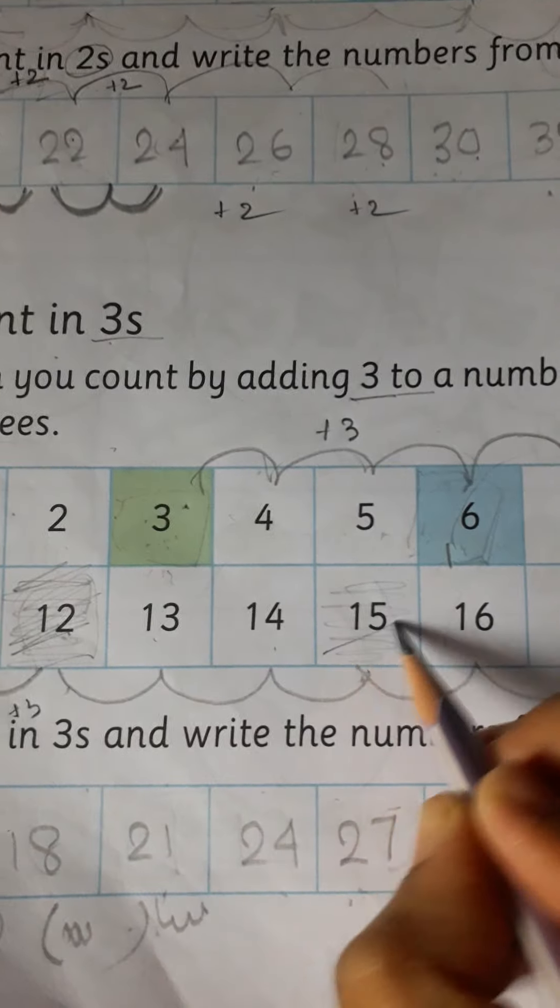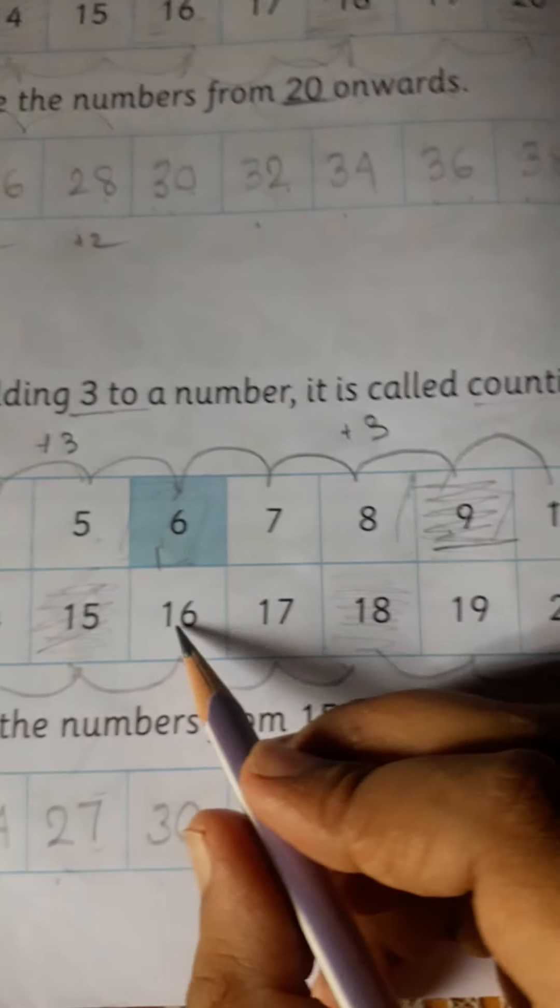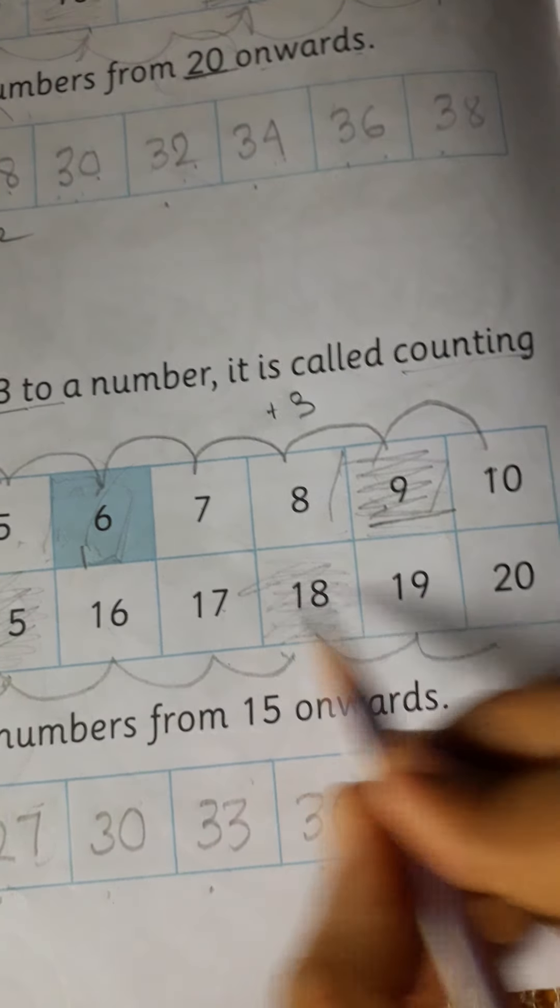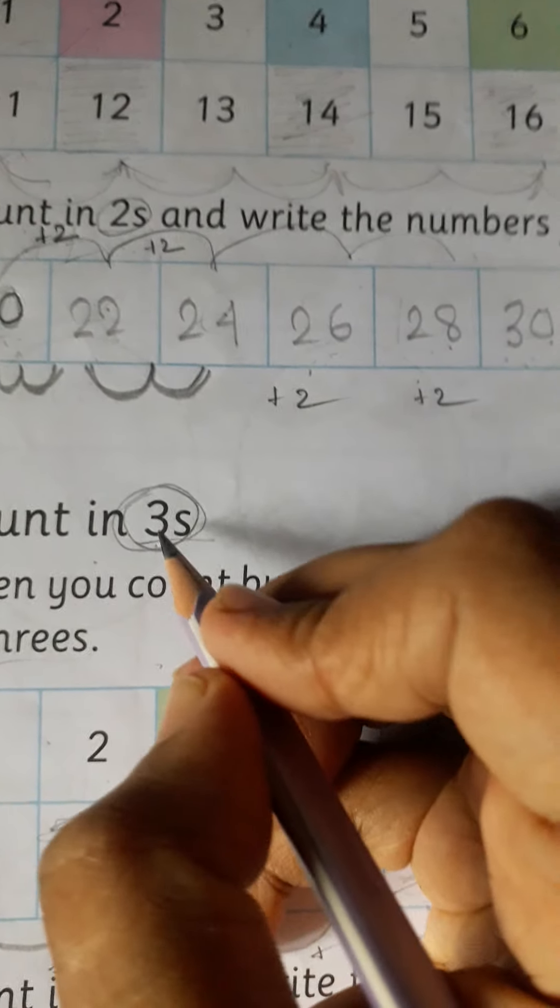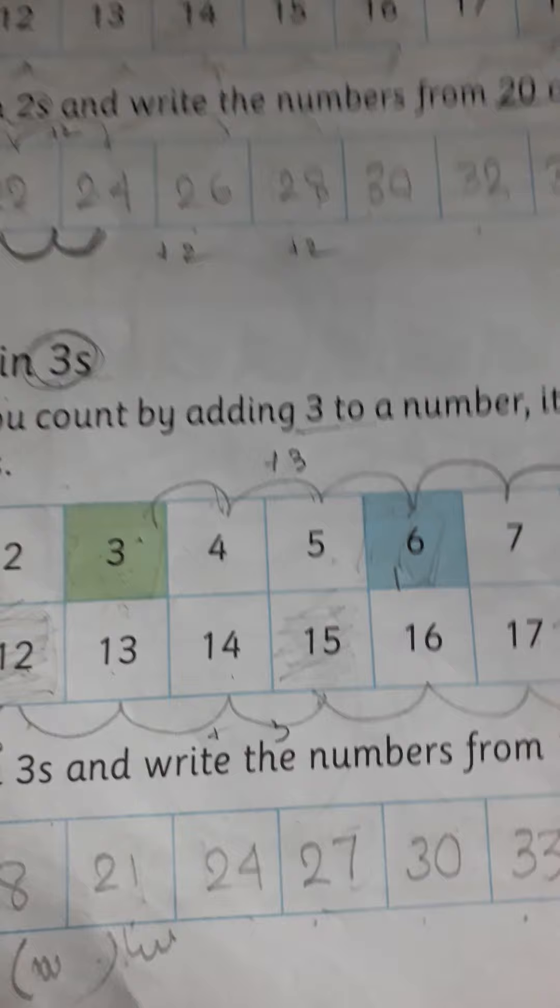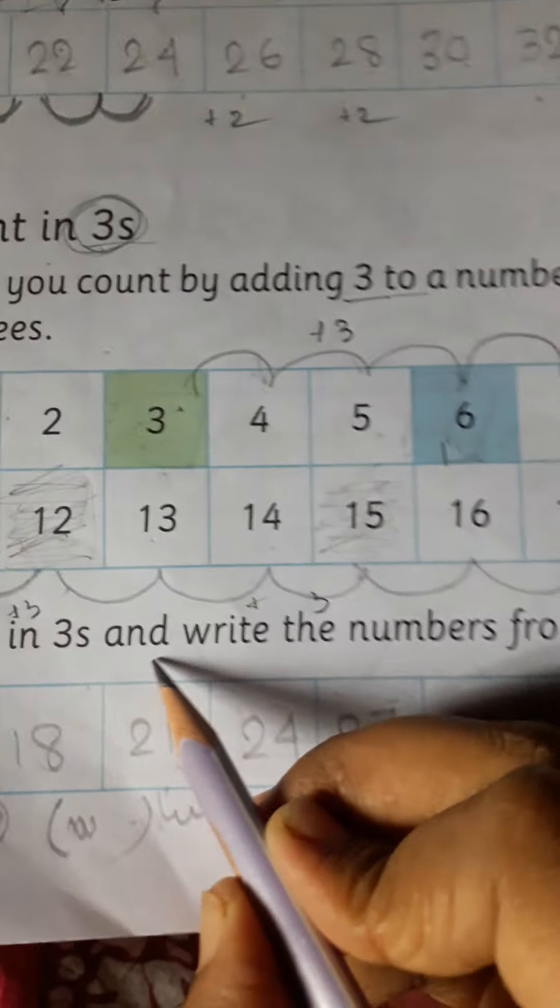Then 13, 14, 15, 16, 17, 18, 19, 20, 21, 21. Because we have to count in 3s. Count in 3s.